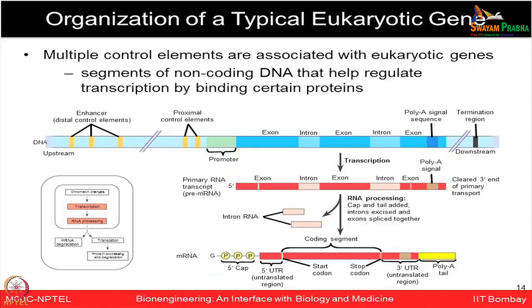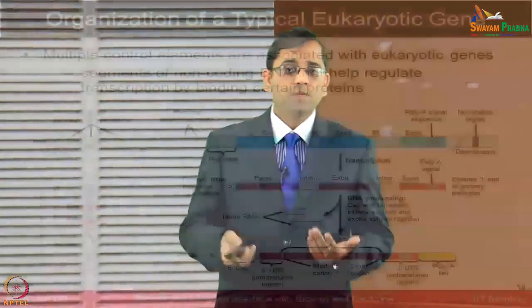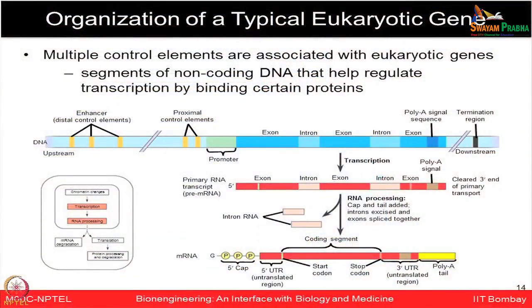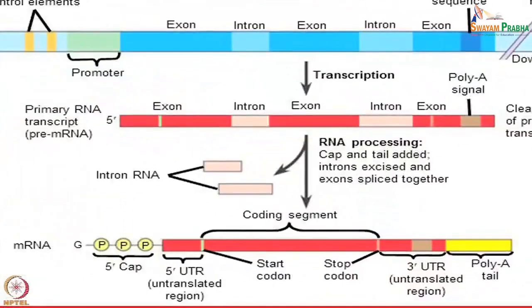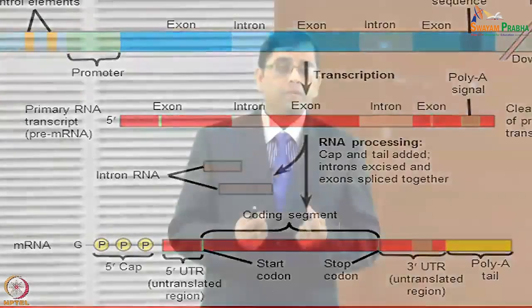The organization of a typical eukaryotic gene is complex. We have various exon regions and intron regions. In the process of alternative splicing, introns are removed and exons come together to give rise to the functional RNA molecule. There are multiple control elements associated with eukaryotic genes — segments of non-coding DNA that help regulate transcription by binding to certain proteins.